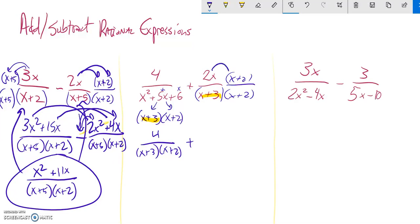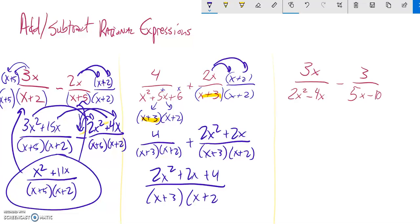If I do that, I have just 4 over x plus 3 times x plus 2, plus distribute that 2x into there, 2x squared plus 2x over x plus 3 times x plus 2. When I add these together, none of these will combine. They're all not like terms. So 2x squared plus 2x plus 4, that whole thing's over x plus 3 times x plus 2.